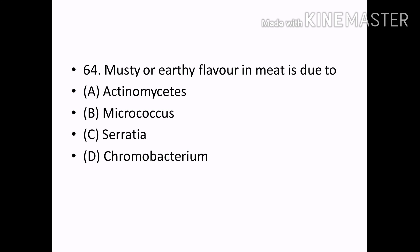Musty or earthy flavor of meat is due to: Options — Actinomycetes, Micrococcus, Serratia, Chromobacterium. Correct answer: Option A — Actinomycetes.